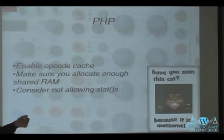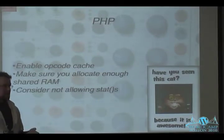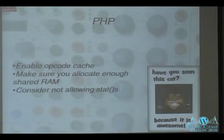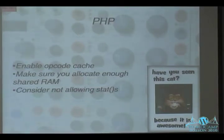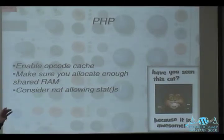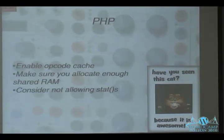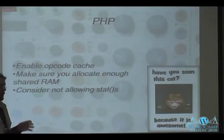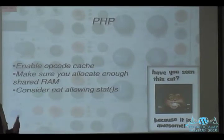APC is the opcode cache I use — install it with PECL. It doesn't make PHP run faster, but it leads to significant performance gains because you're not constantly reading files in and compiling them on every single request. Allocate enough RAM to your opcode cache. You can disable stats so it doesn't check when files change for extra performance, but then PHP file changes aren't noticed until you restart the server — so only consider that for a well-separated production environment.